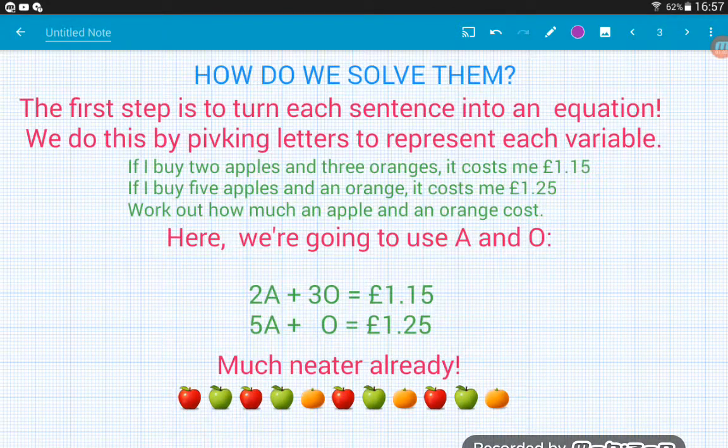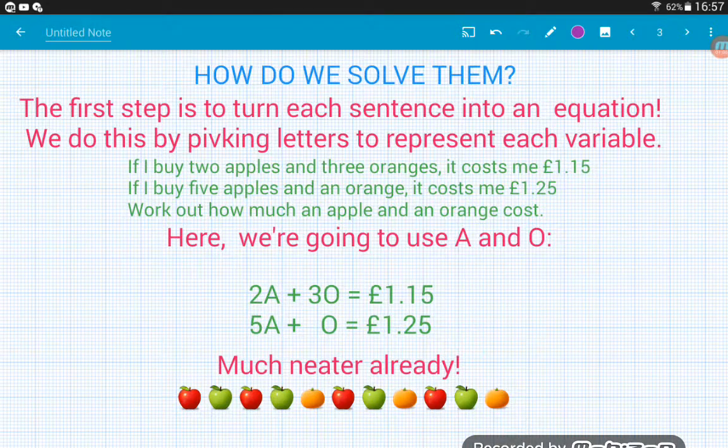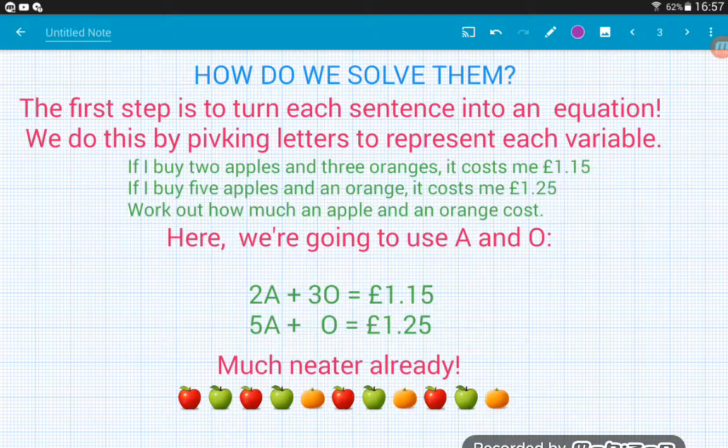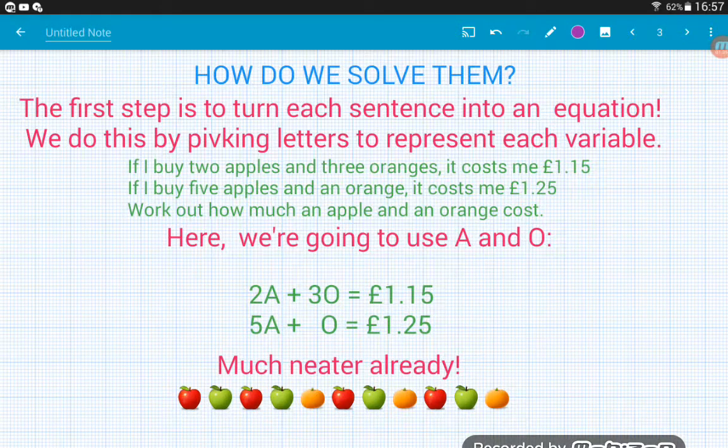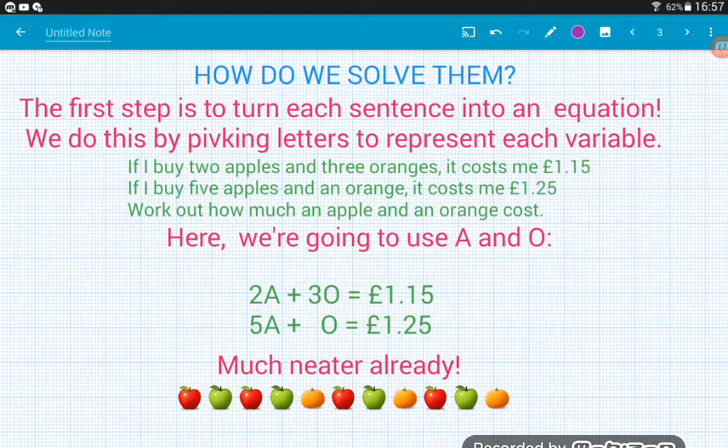So how do we do this? Well, our first step is we want to think of sensible letters to represent our two variables. So for apples and oranges, I think it makes quite a lot of sense to use A and O. The reason that we do that is we then want to make an equation out of each sentence. The whole point of algebra is to simplify things. As soon as we turn these two sentences into equations, they look a lot cleaner. So I buy two apples and three oranges and that costs me £1.15, so that's the same as 2A add 3O equals £1.15. And then the same for five apples and one orange, 5A add O is £1.25.